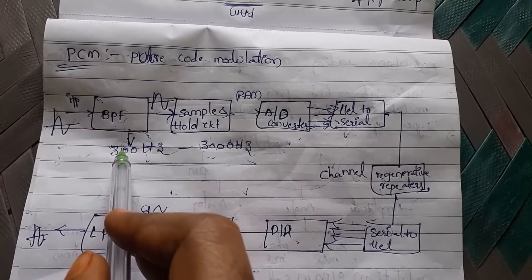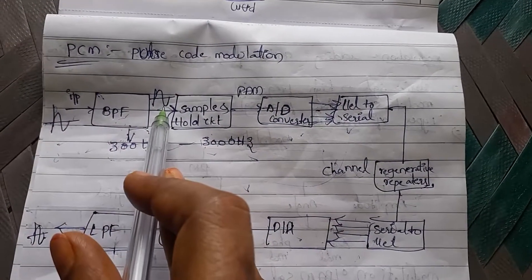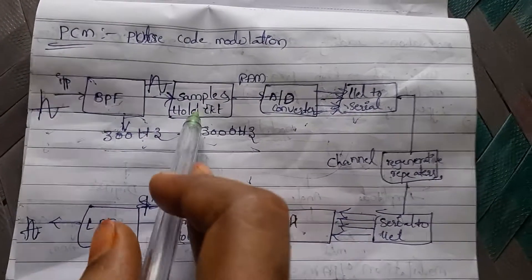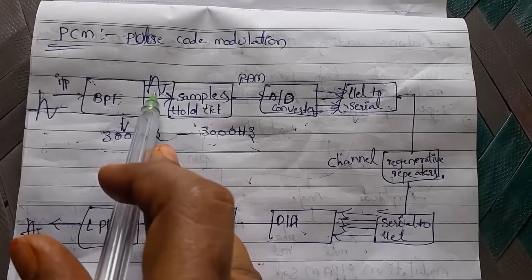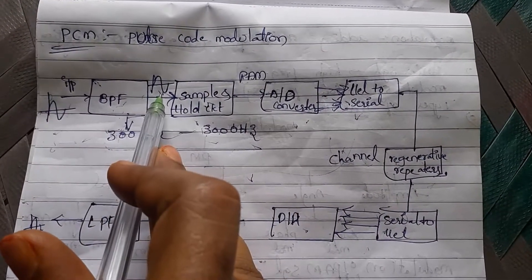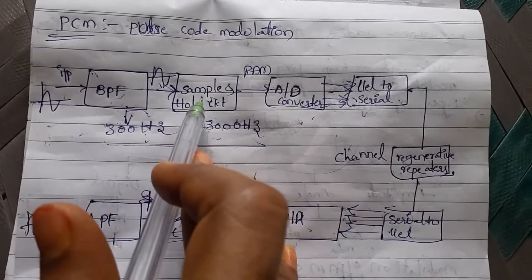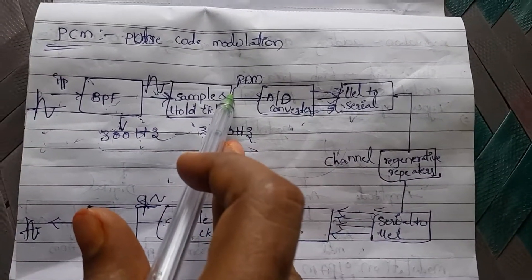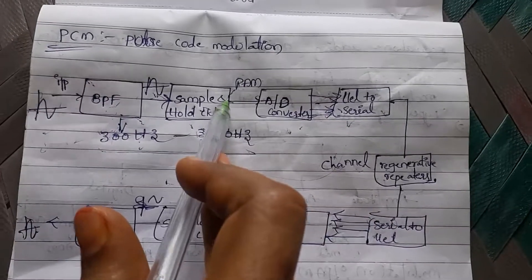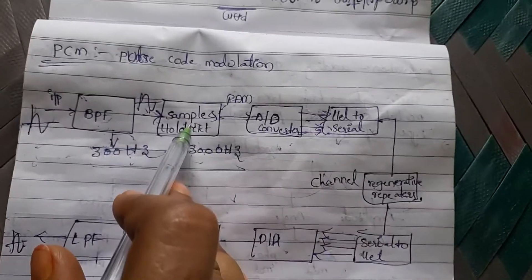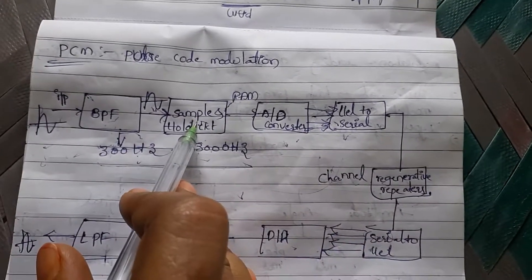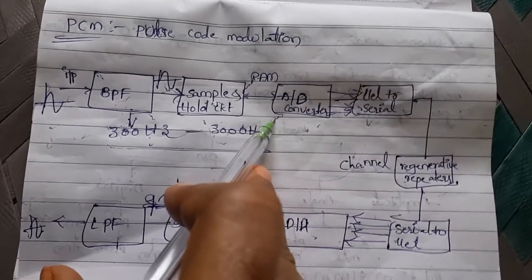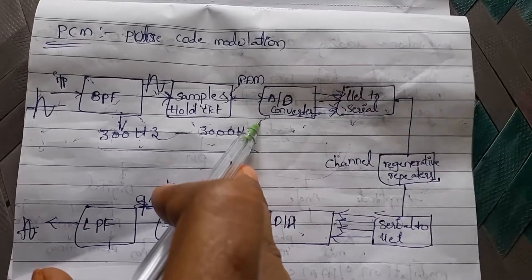After filtering, the signal is given to the Sample and Hold circuit. The Sample and Hold circuit converts the analog signal into samples with discrete amplitude values. The output of the Sample and Hold circuit is a PAM (Pulse Amplitude Modulation) signal, which is then given to the ADC.